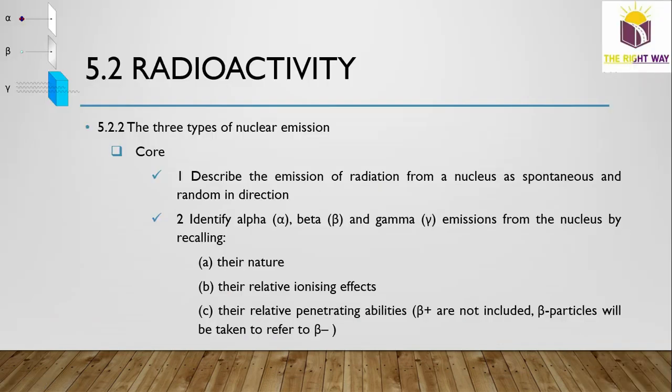Today we are going to discuss radioactivity, topic 5.2.2: the three types of nuclear emission. In core, we will discuss the emission of radiation from a nucleus as spontaneous and random in direction. We will identify alpha, beta, and gamma emissions, their nature, relative ionizing effect, and penetrating ability. In this topic, we will only discuss beta negative particles, not beta positive particles.